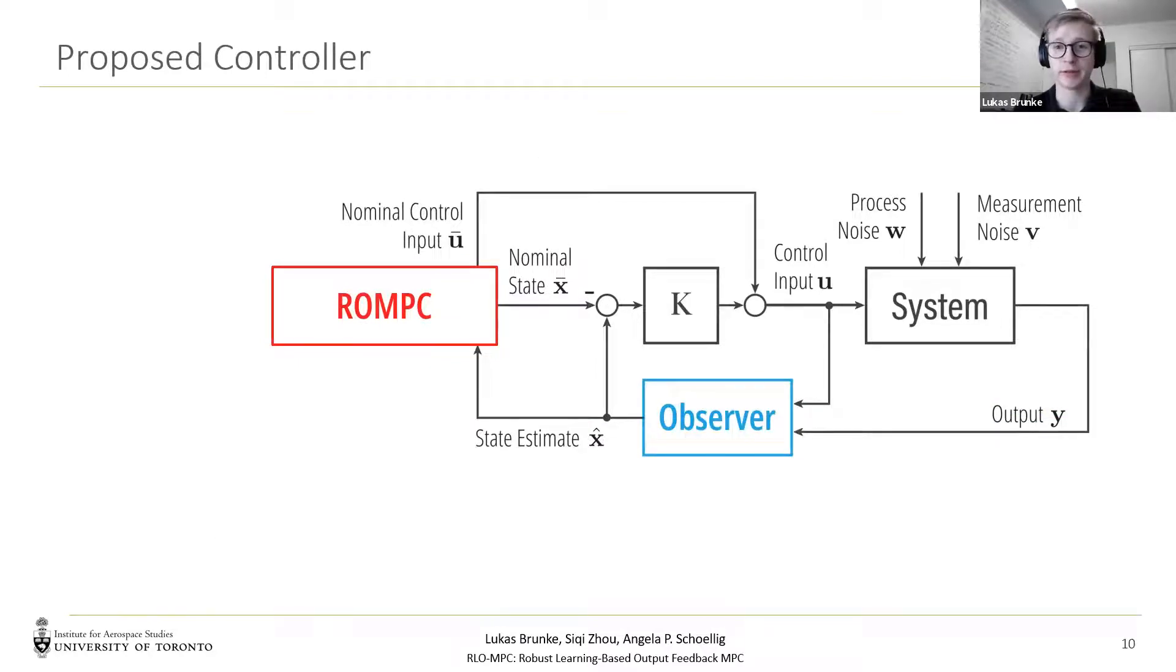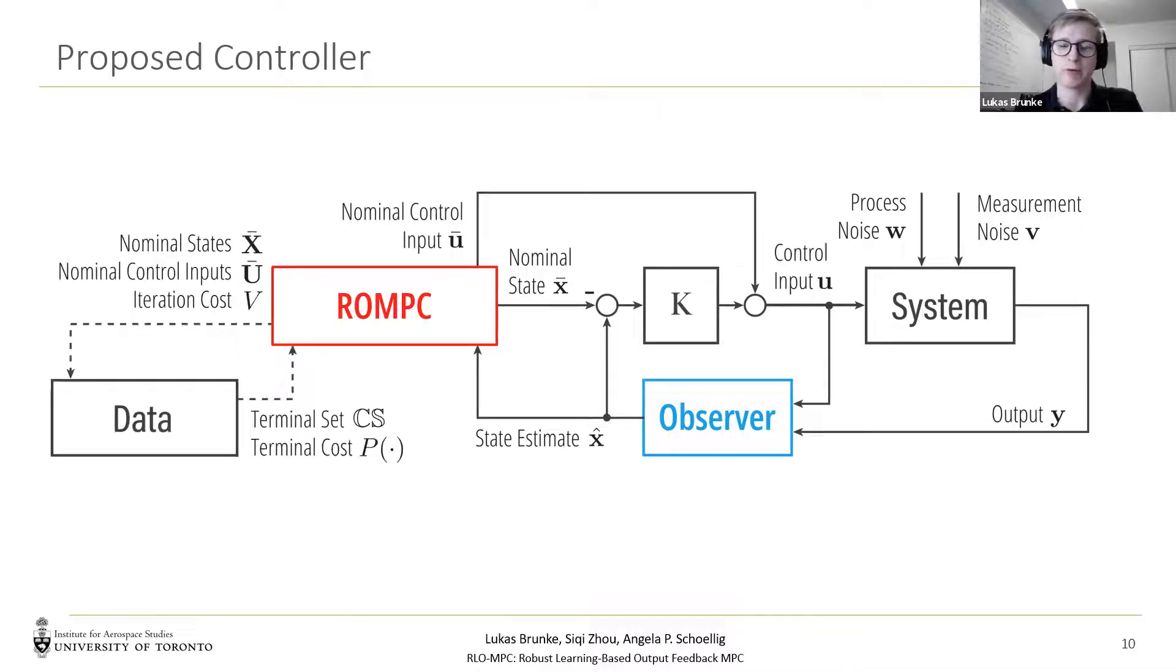So now we have built up a controller that can stabilize the desired uncertain LTI system. However, we're not leveraging the fact that we deal with repetitive tasks. In our proposed robust learning-based output feedback MPC, we use past iterations to determine a terminal cost function and terminal constraint set from data. This allows us to improve the performance of the controller over iterations. And we call this controller RLO MPC.